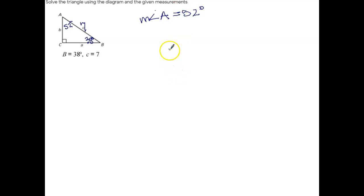So now we just need to figure out what the length of a and the length of b are. Because we only know one side length, we're only going to be able to use trig for one of them, and then for the other one, we can use Pythagorean theorem if we want.